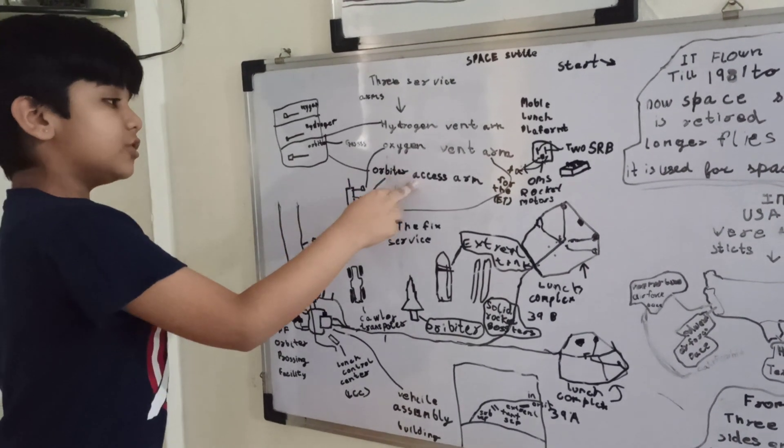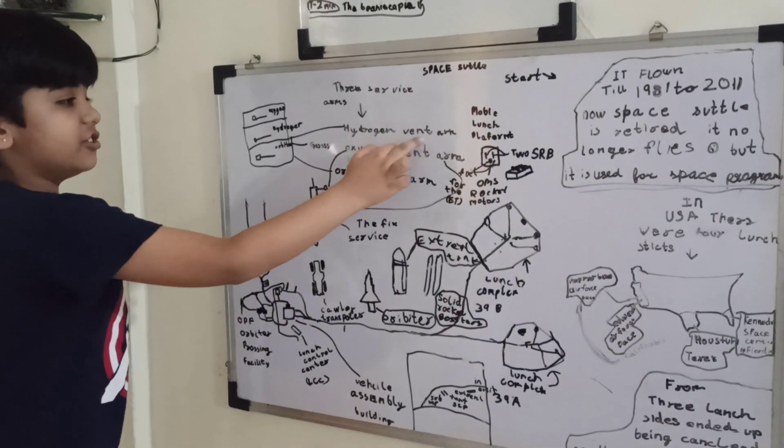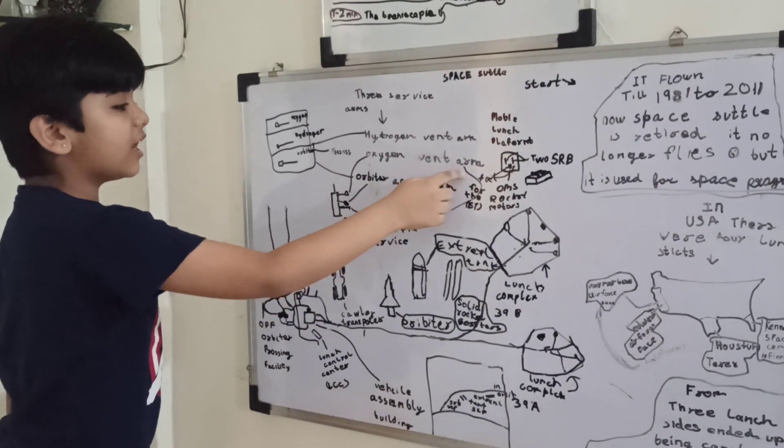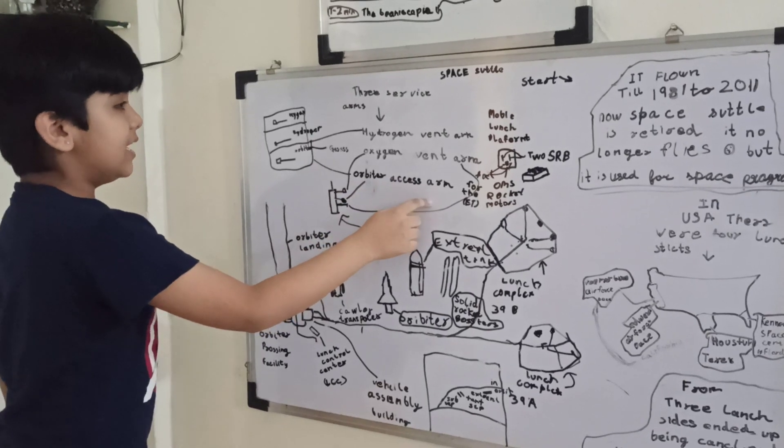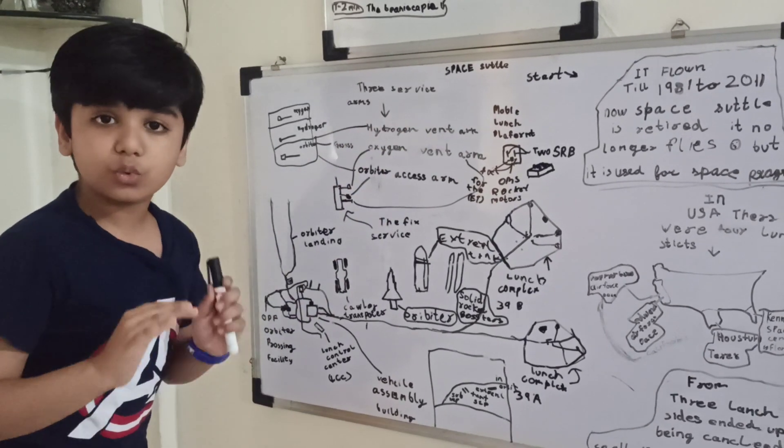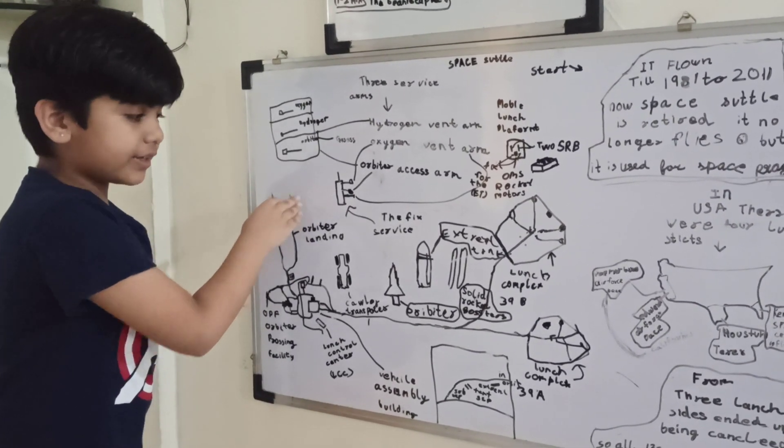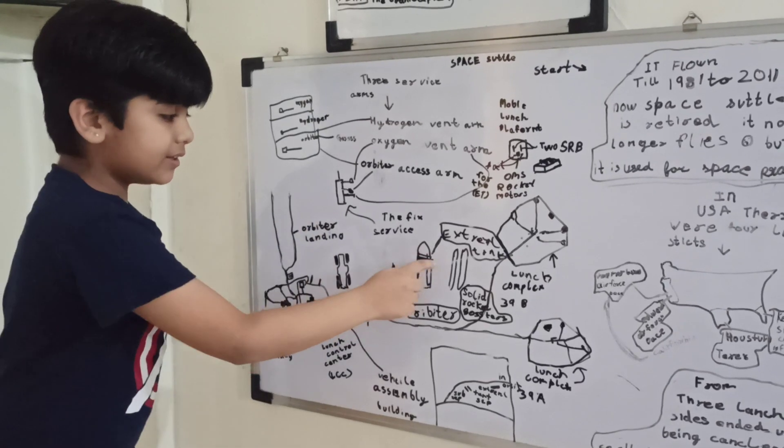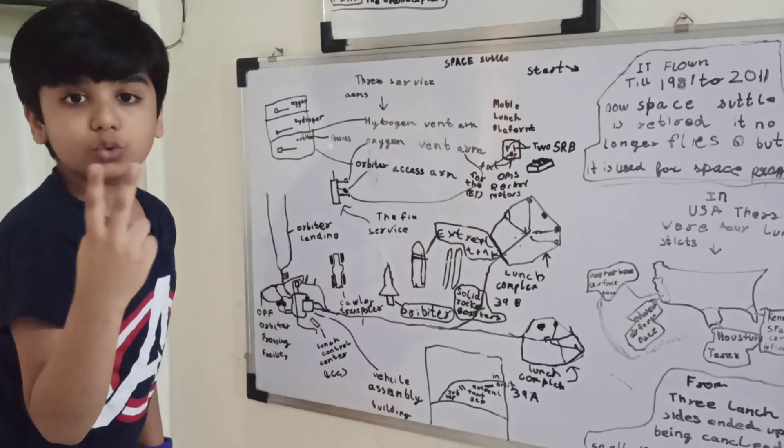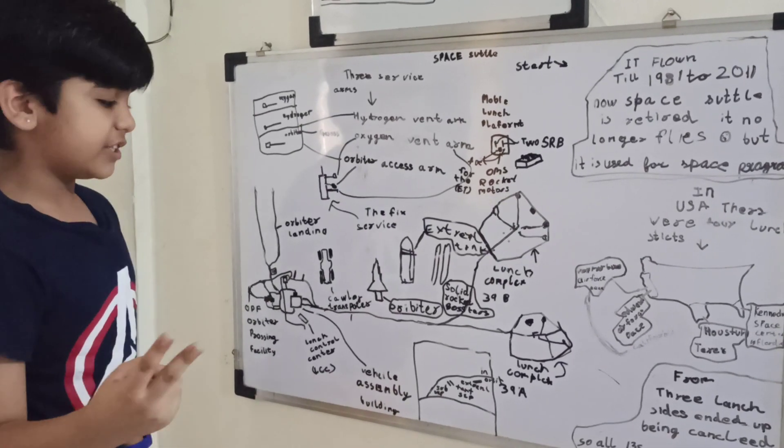Now let us learn about the three service arms. There is the hydrogen vent arm, oxygen vent arm, and orbiter access arm. Let's first learn about the hydrogen vent arm. It keeps cool the hydrogen tank where it is filled. And remember, in this external tank there are two smaller tanks, one for liquid hydrogen and one for liquid oxygen.